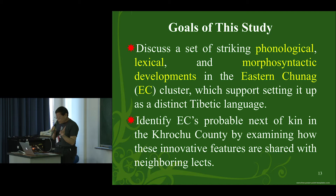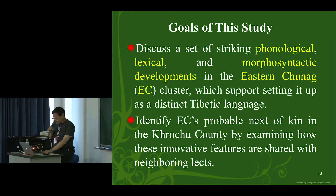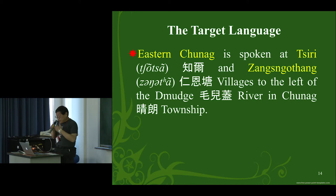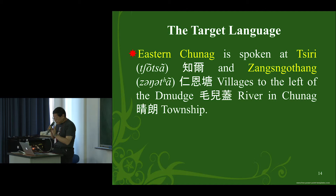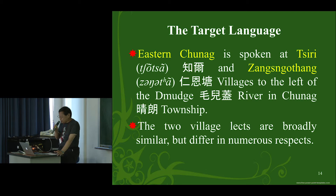The second goal is to identify EC's probable next of kin in Heishui County by examining how these innovative features are shared with neighboring lects. Eastern Chuna is spoken only in two villages: one is called Zhongzong — written Tibetan TSIRI, but pronounced Zhongzong or Zhe-er in Chinese — and the other is Nen-Tang, or Zhen-Tang in local pronunciation. These two villages are to the left of the Murgi or Maragai River, in Chuna or Qinglang Township. The two village dialects are broadly similar but differ in numerous respects.